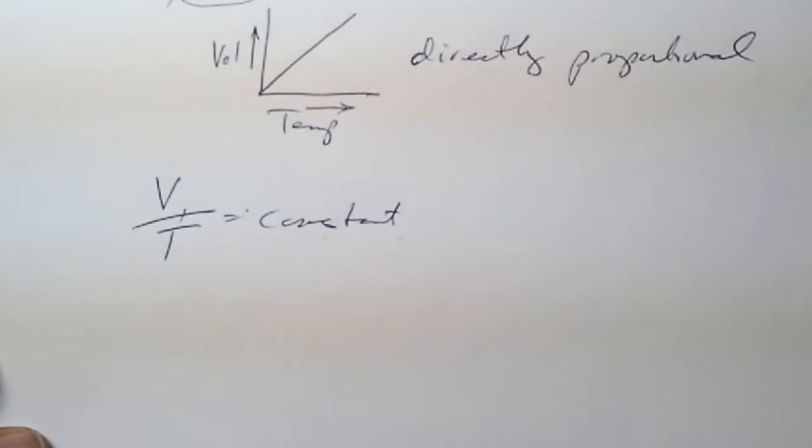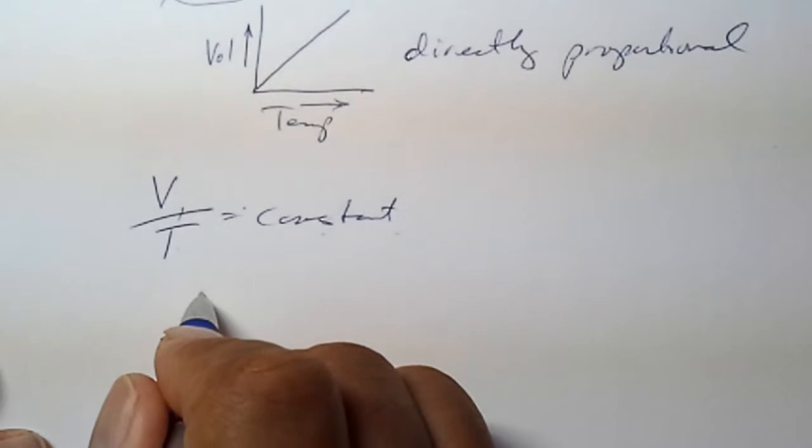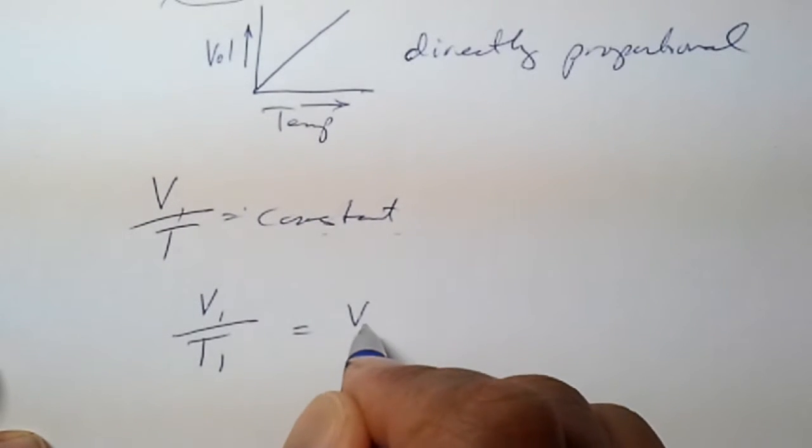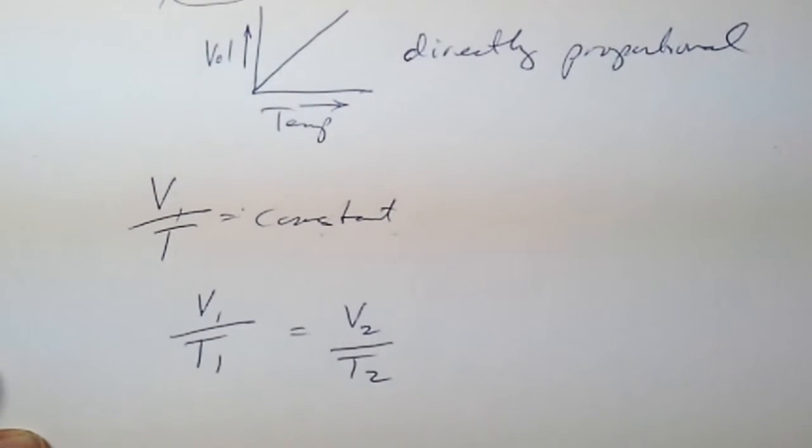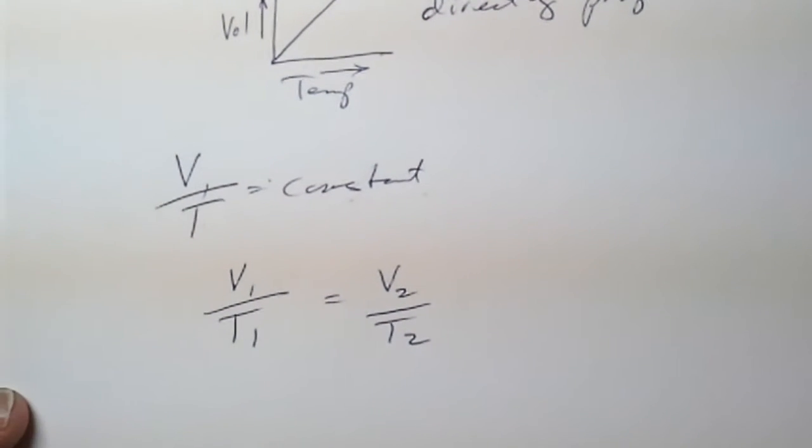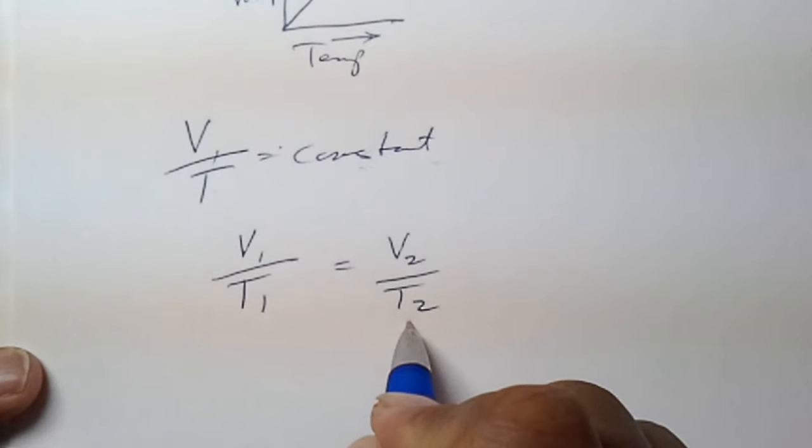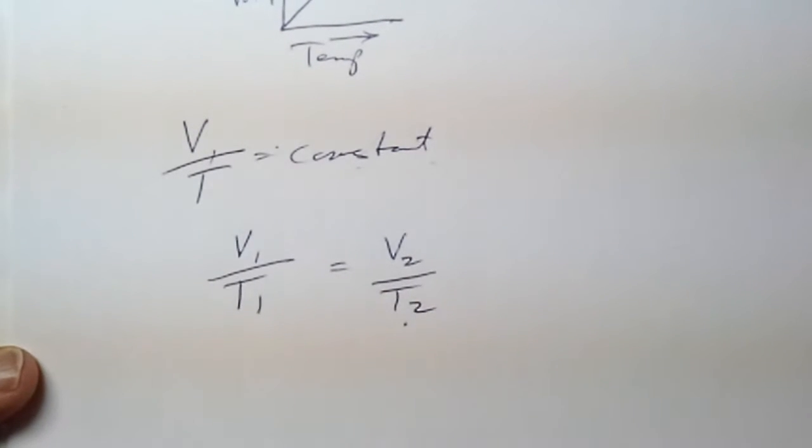V1, T1 equals V2 and T2. If those two systems are being compared, we can determine what one of these values is if we know the other three.